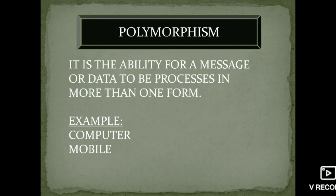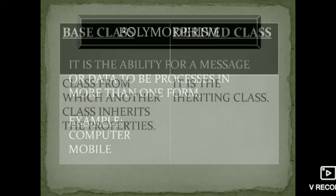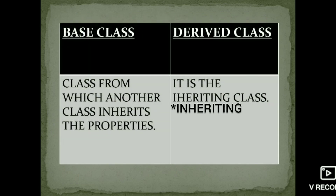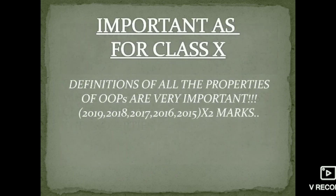The definitions and examples of OOP principles are very important for your Class 10 examination — they carry two marks. The base class is the class from which properties are inherited, and the derived class is the class which inherits properties from the base class. Looking at past papers from 2018 and 2019, these definitions appear consistently for two marks.